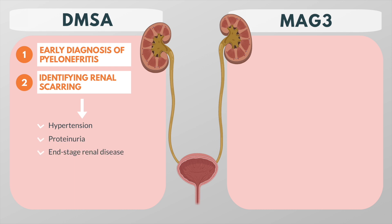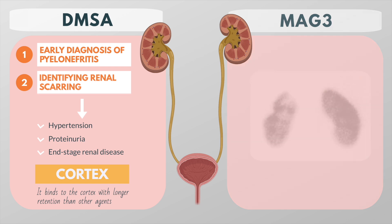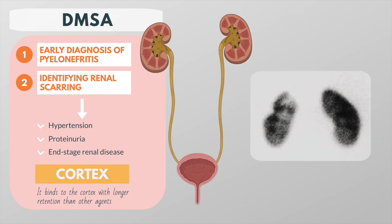DMSA is an ideal agent for the assessment of the renal cortex as it binds to the cortex with longer retention than any other agent. In pyelonephritic areas of the kidney, the uptake of DMSA will be reduced. During scar formation, the functional tubular cells are replaced by fibrous tissue that does not take up the DMSA.